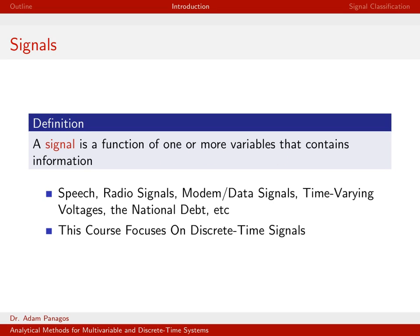Sometimes the signals that we deal with contain more than one variable. For instance, images you can think of as two-dimensional signals. There's the row and column of the pixels that you're working in. So those signals contain two variables. You can get more complicated than that. In radar, we often deal with signals that have a range component, a Doppler component.